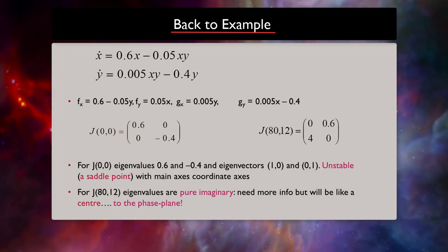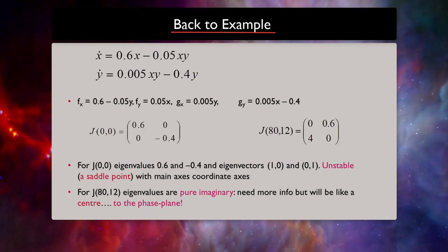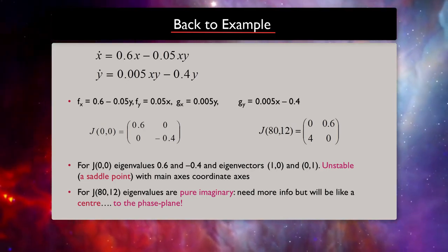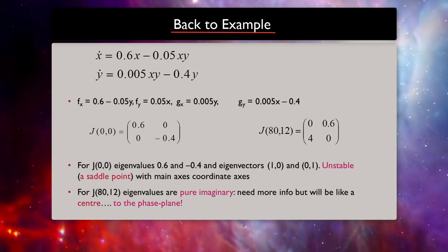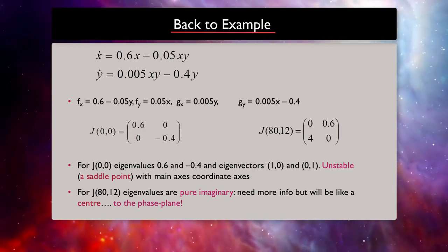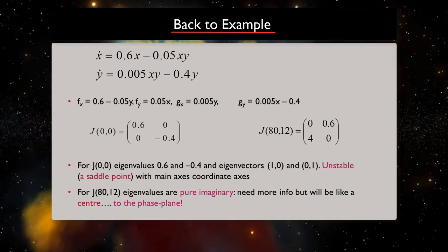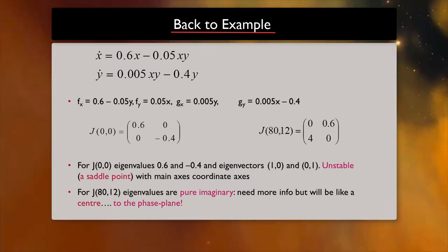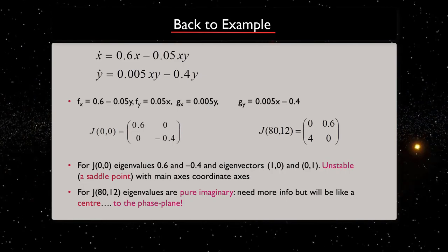For the first fixed point, we see that there is one eigenvalue with positive real part, which means that it is unstable. And for the second one, the eigenvalues are pure imaginary, so they can be stable or non-stable.